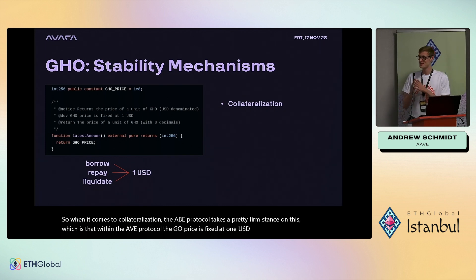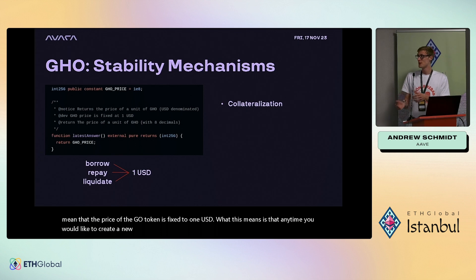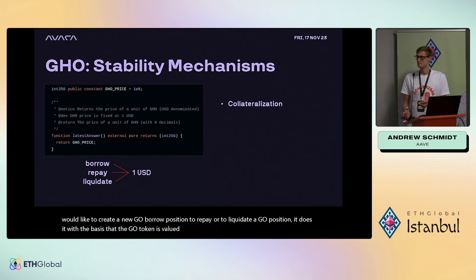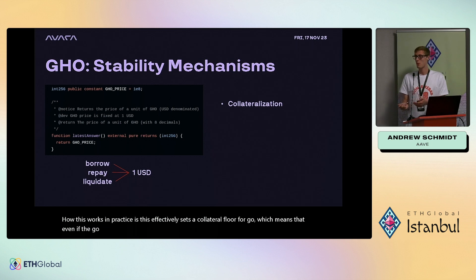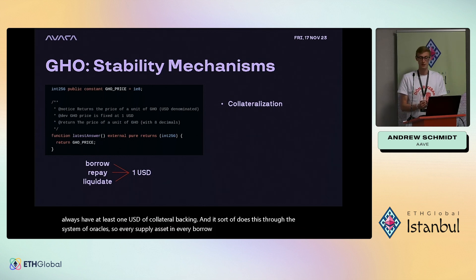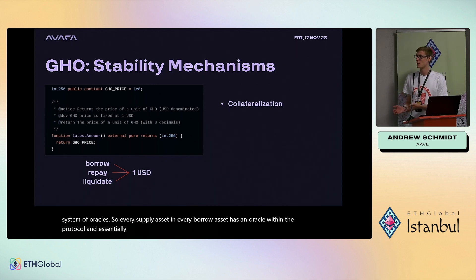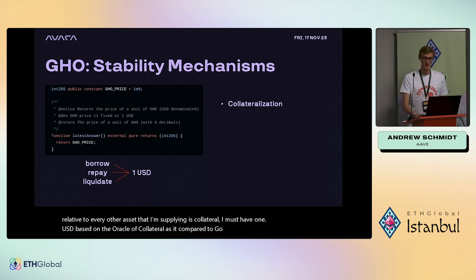This doesn't mean the market price of GHO is fixed to one USD. It means that any time you create a new GHO borrow position, repay, or liquidate a GHO position, it does so with the basis that GHO is valued at one USD. This effectively sets a collateral floor for GHO: even if the open market price fluctuates, within the Aave protocol GHO must always have at least one USD of collateral backing, enforced through the oracle system.